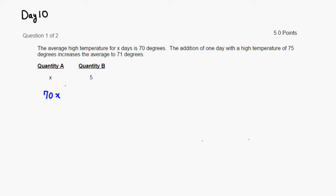Then we have one additional day with 75 degrees, so we're going to add 75. And then the average becomes 71 degrees, so it's going to be the same thing as 71 times X plus 1.